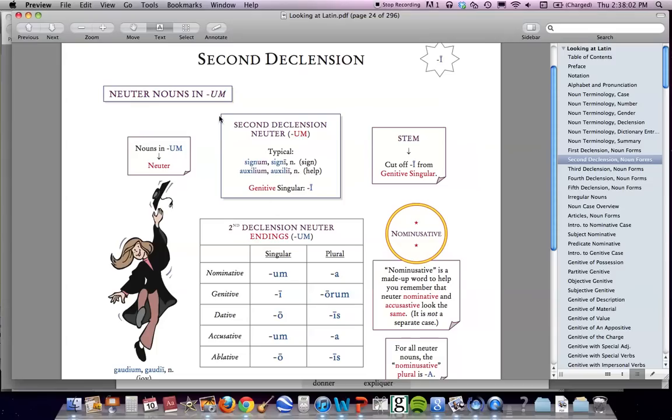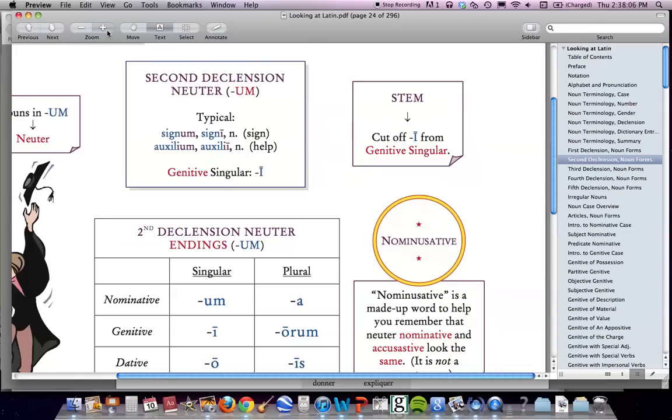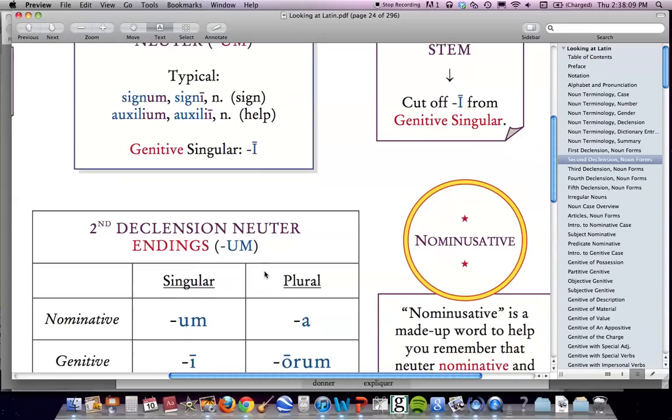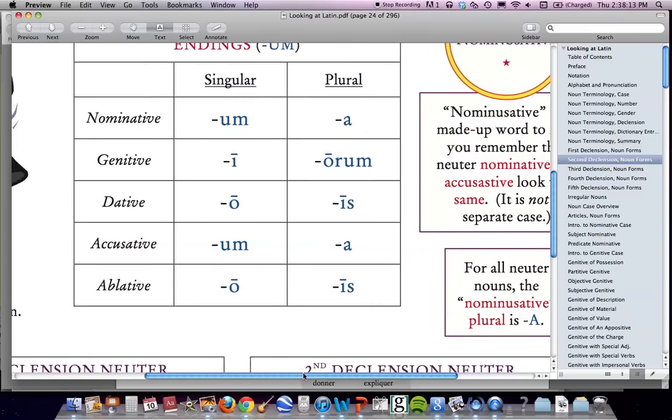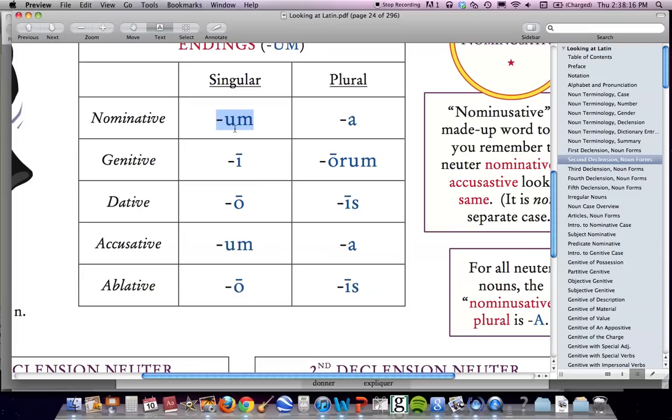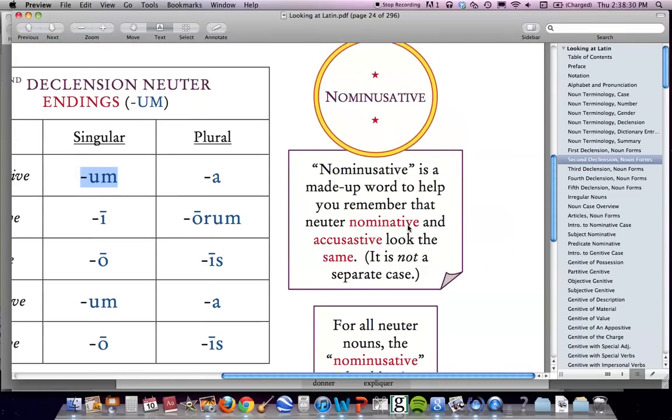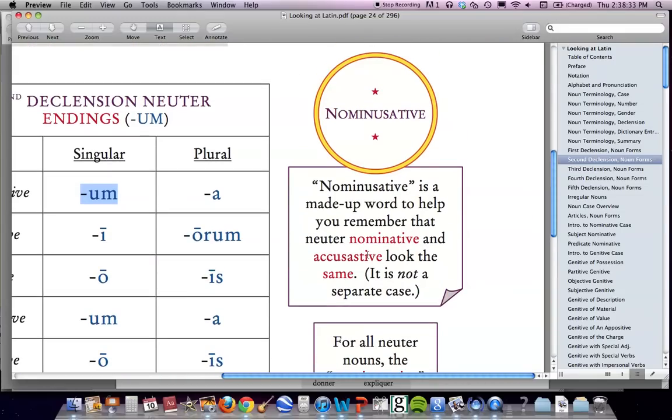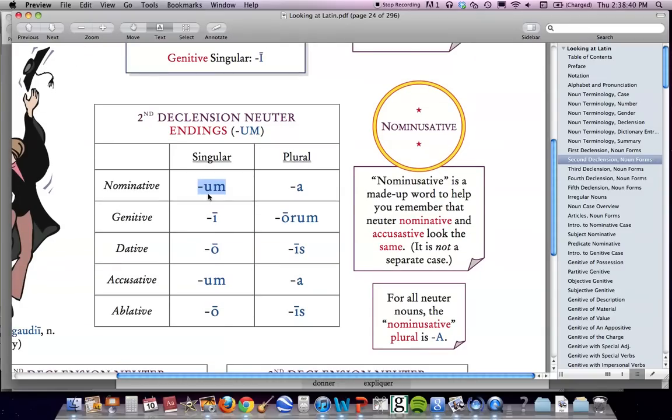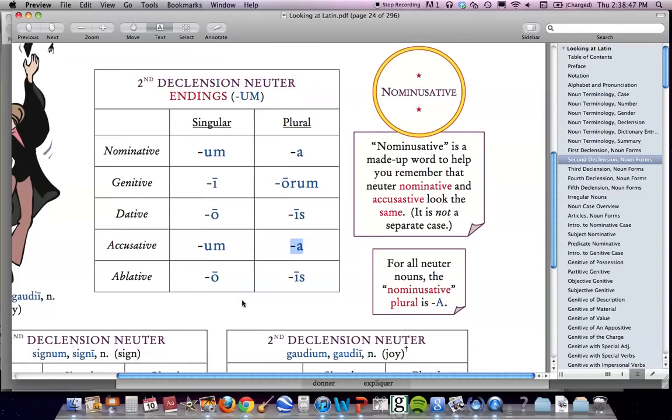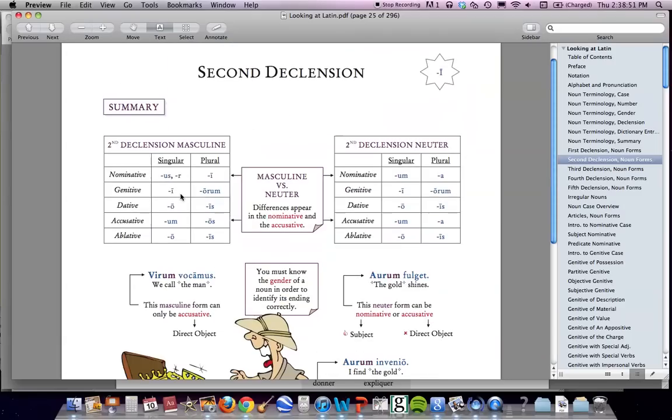But we should also remember that we have second declension nouns that are actually known as neuter nouns. The way you recognize these, they have a genitive in I because they are second declension. But the thing is, for these, the nominative is in um instead of us. So the endings go like this: um, e, o, um, o, a or um, is, a, is. And the thing that we know about the neuter is that the nominative and the accusative are always the same. They have the same um right here for the accusative and nominative and in the plural A and A as well. Something important for you to remember.